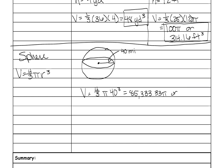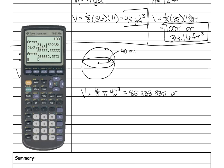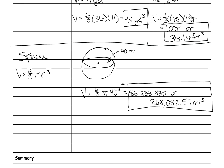Or, and then multiply it out times pi. So it's 268,082.57 miles cubed. Now make sure you go to the bottom and write your summary and notes will be finished.